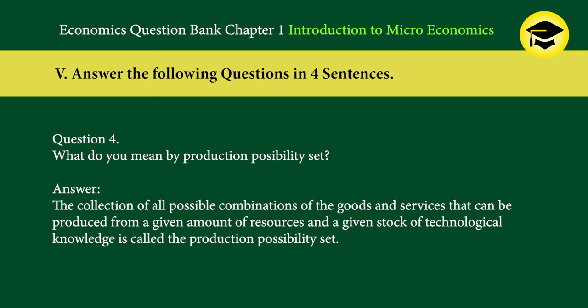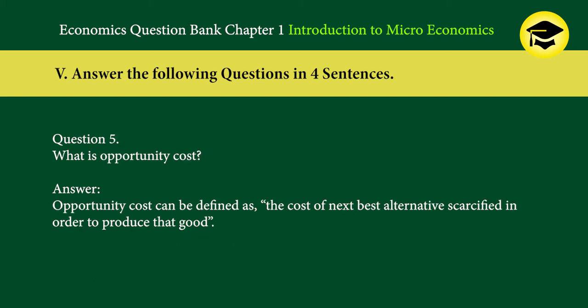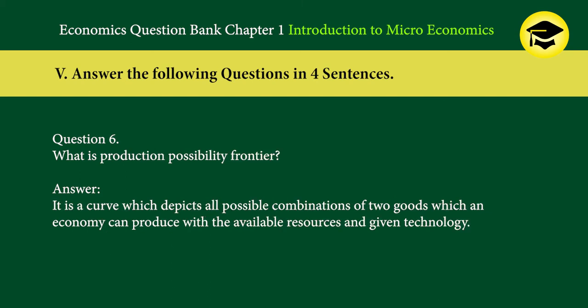Question 4: What do you mean by production possibility set? Answer: The collection of all possible combinations of goods and services that can be produced from a given amount of resources and a given stock of technological knowledge is called the production possibility set. Question 5: What is opportunity cost? Answer: Opportunity cost can be defined as the cost of the next best alternative sacrificed in order to produce that good. Question 6: What is production possibility frontier? Answer: It is a curve which depicts all possible combinations of two goods which an economy can produce with the available resources and given technology.